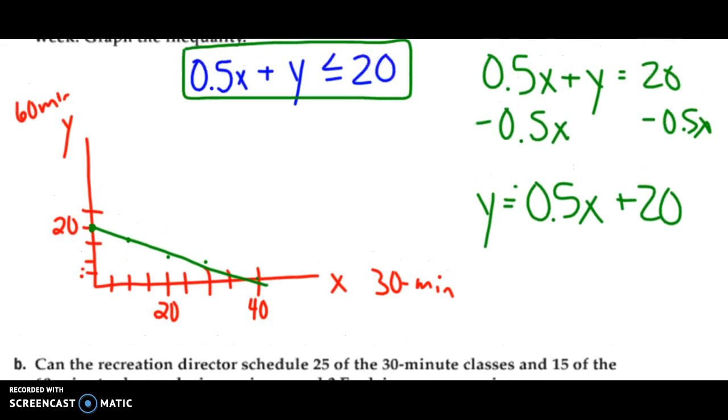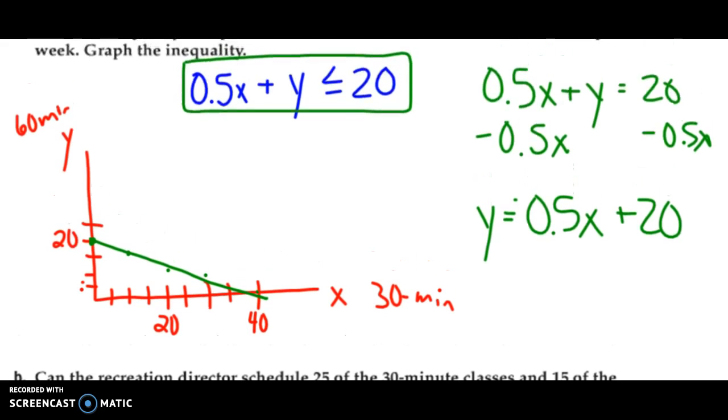And I think about where I have to shade because I'm not done yet. So, again, if I tried 0, 0, easiest one to try. If I put this in, 0 plus 0 is less than or equal to 20, that's true. So I'm going to shade everything below. And for the most part, when you do linear inequality graphs, such as this, you're going to have it be in the boundary shaded below.